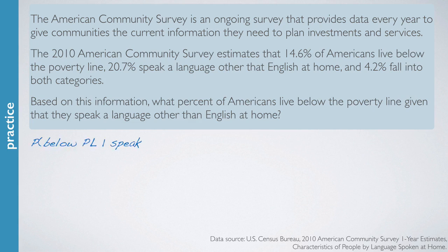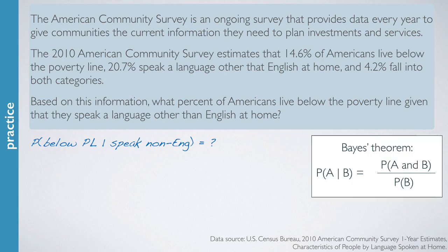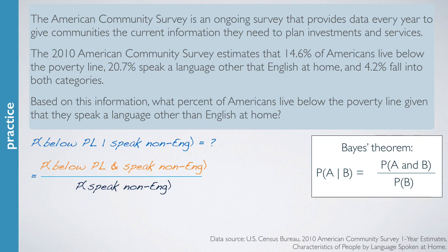We're asked for the probability of living below the poverty line given that the person speaks a language other than English at home. Since this is a conditional probability, we use Bayes' theorem: probability of A given B equals the joint probability divided by the marginal probability of the event we're conditioning on. In context, this is the probability of living below the poverty line and speaking a language other than English at home, divided by the probability of speaking a language other than English at home. We're told that 4.2% meet both criteria, so the numerator is 0.042.